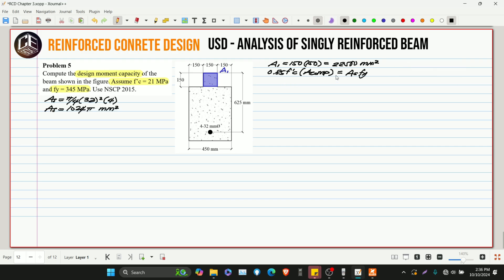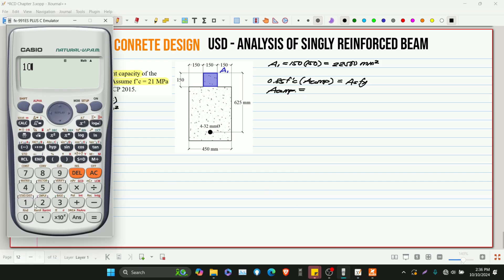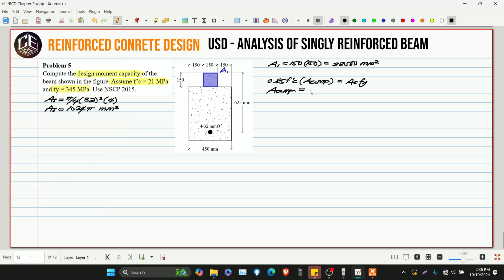So this is 1024 pi millimeter squared. So we can now get the area compression. AS is 1024 pi multiplied by FY over 0.85 F'c. Our F'c is 21 MPa. So 62,177.135 mm squared. Since our area compression is greater than area 1, therefore A is greater than 150 millimeters.